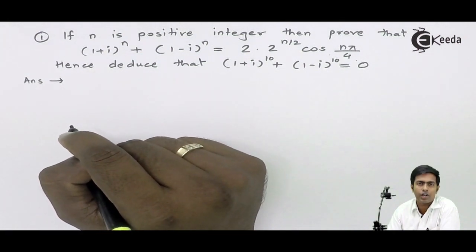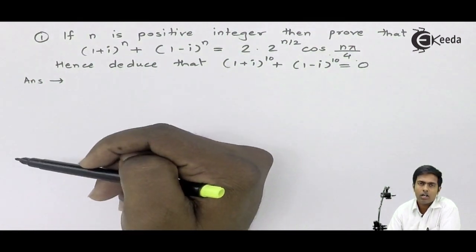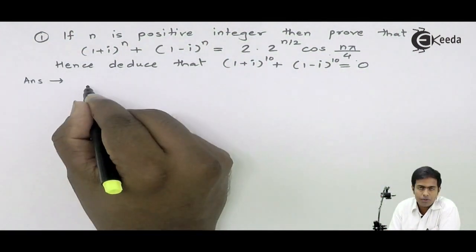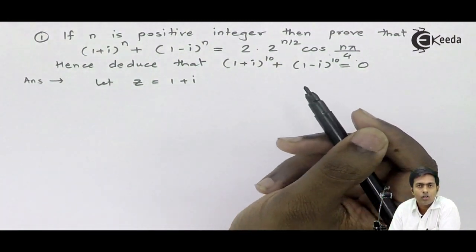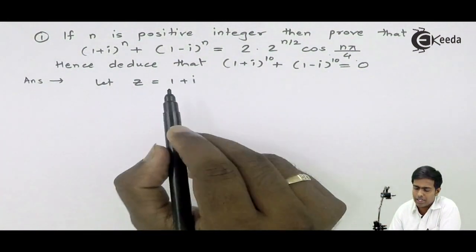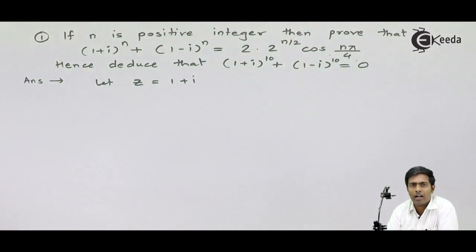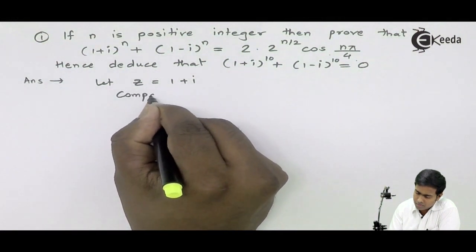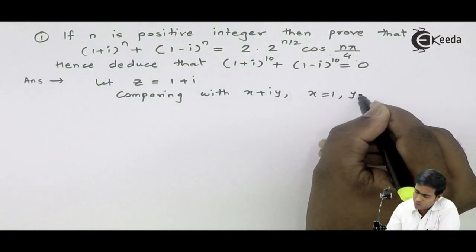To find the power, we need to convert the given complex number into polar form. Our first duty will be to convert the given numbers into polar form. Let's assume the first number as z, which is 1+i. To convert into polar form, we require r and θ, that is the modulus and amplitude. Comparing with x+iy, we get x=1, y=1.